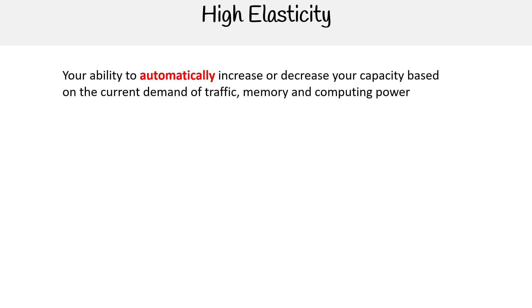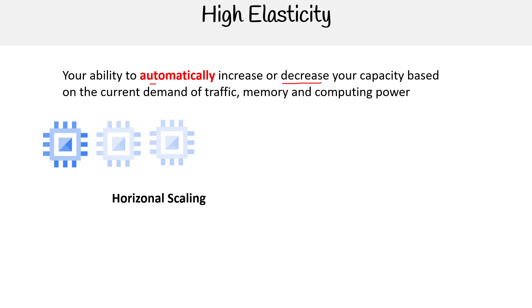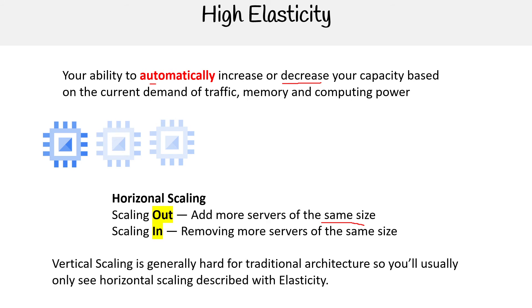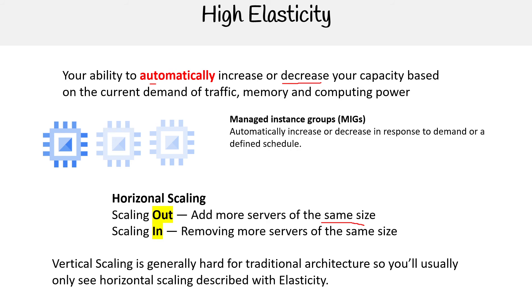You have high elasticity — your ability to automatically increase or decrease your capacity based on current demands of traffic, memory, and computing power. It sounds similar to scalability, but the key difference is that it's automated and you also have the ability to decrease. The concept is horizontal scaling where you can scale out by adding more servers, and scale in by removing servers. Generally, when doing things that are elastic, it's usually the same size virtual machines. Vertical scaling is generally hard for traditional architecture, so elasticity applies to horizontal scaling. With Google, we achieve this using managed instance groups, which automatically increase or decrease in response to demand or a defined schedule.